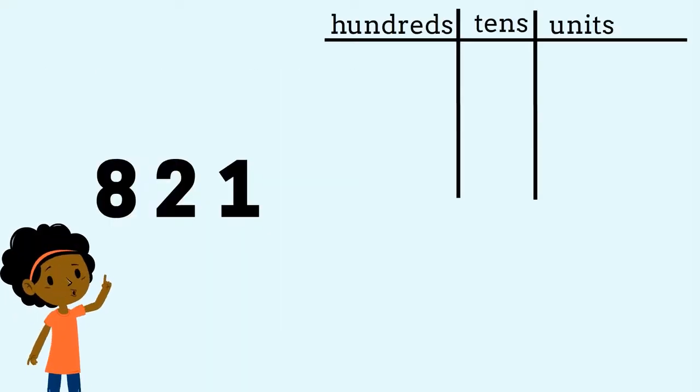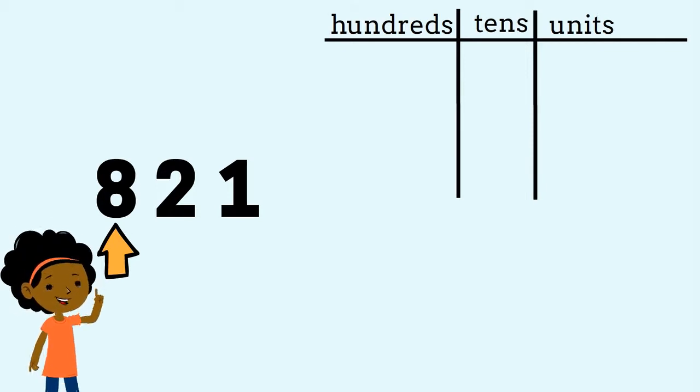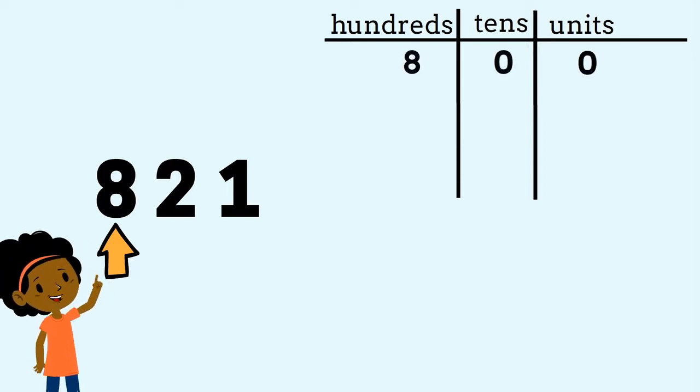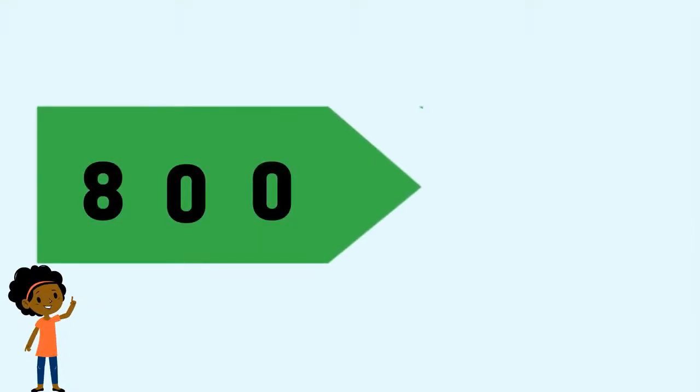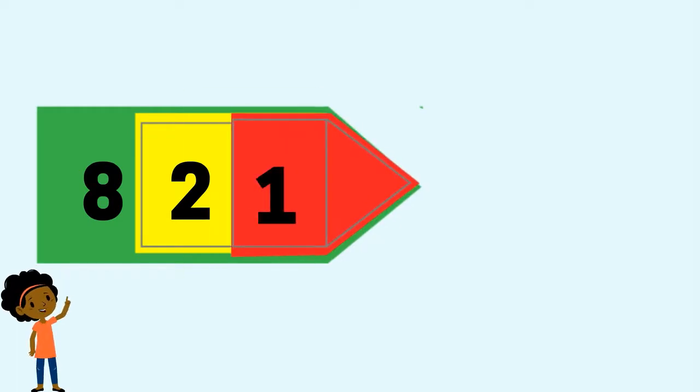Now, what is the value of 8 in this number? Well done! 8 represents 800, 2 represents two tens, and 1 represents one unit. Together they make 821. Let's use arrow cards to represent 821. We will need 800, two tens, and one unit.